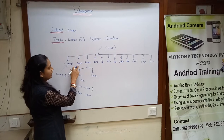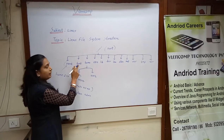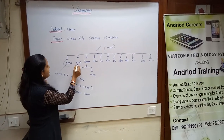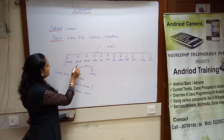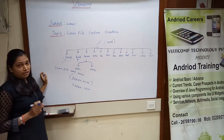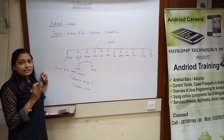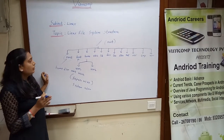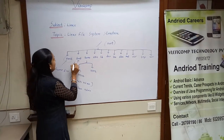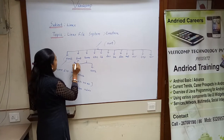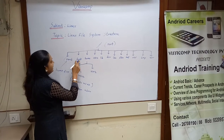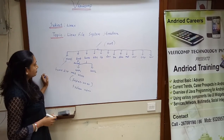Second is the boot directory. This contains all the booting information, like the kernel. The kernel is the heart of the operating system. All kernel-related files are stored in this boot directory.